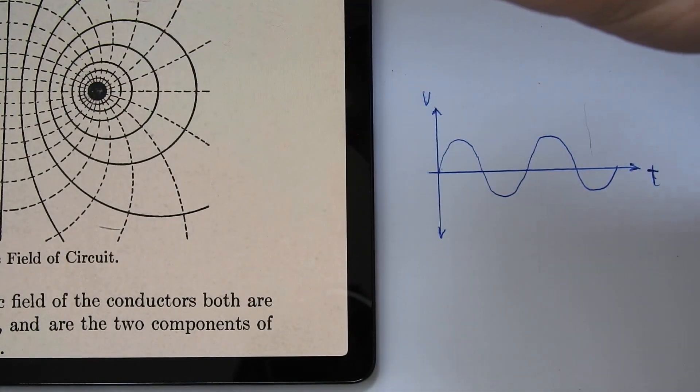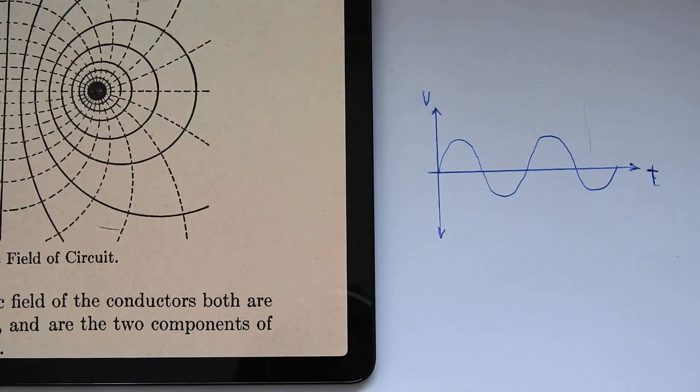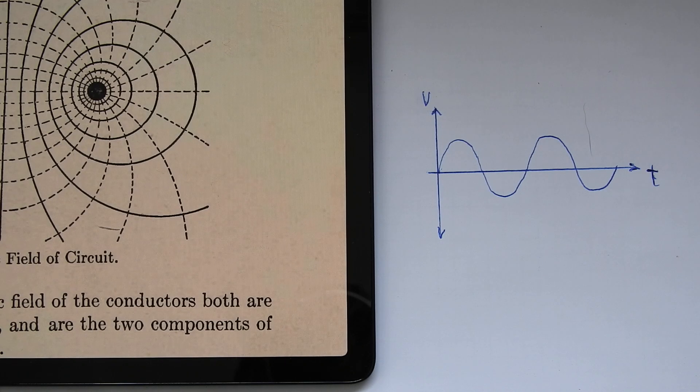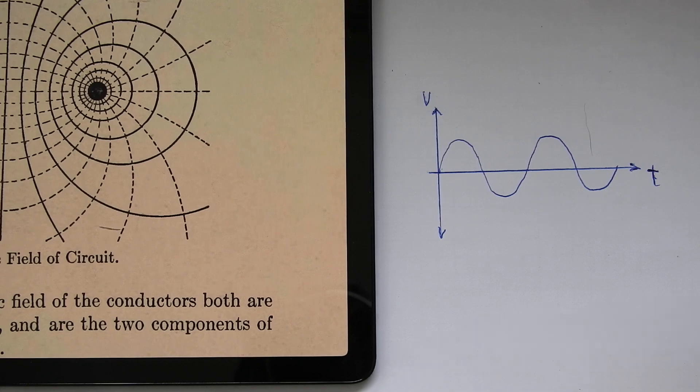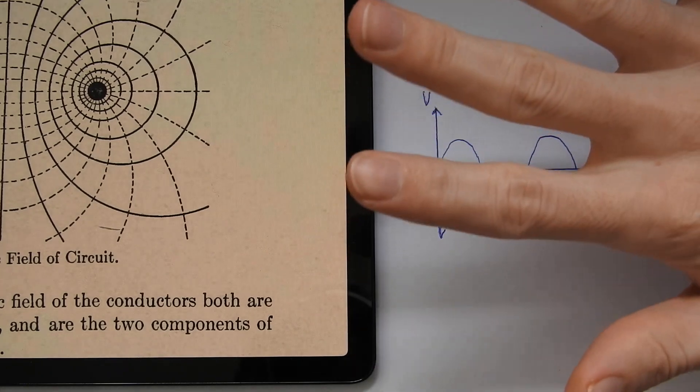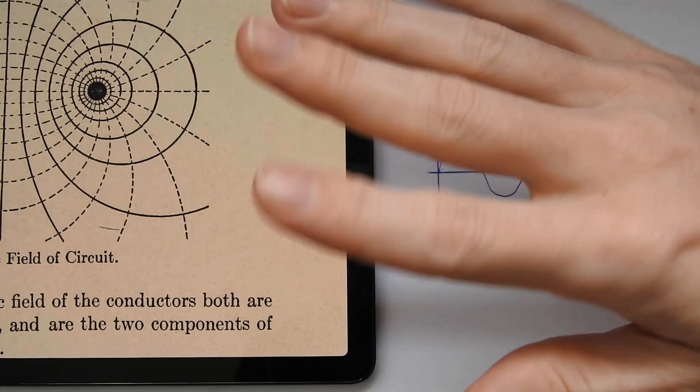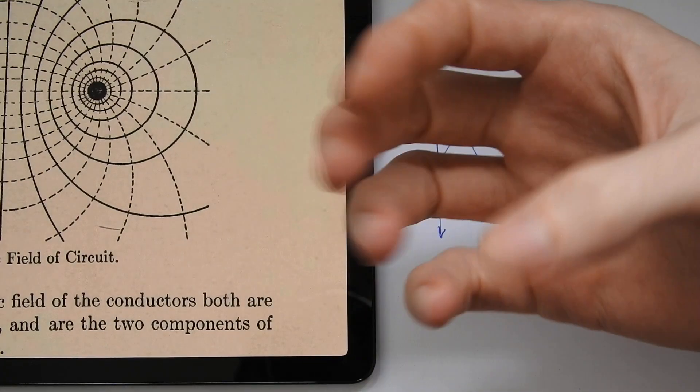So basically our human body is or has an electric field with intelligence. We have consciousness, so we can consciously move and manipulate our electric field.